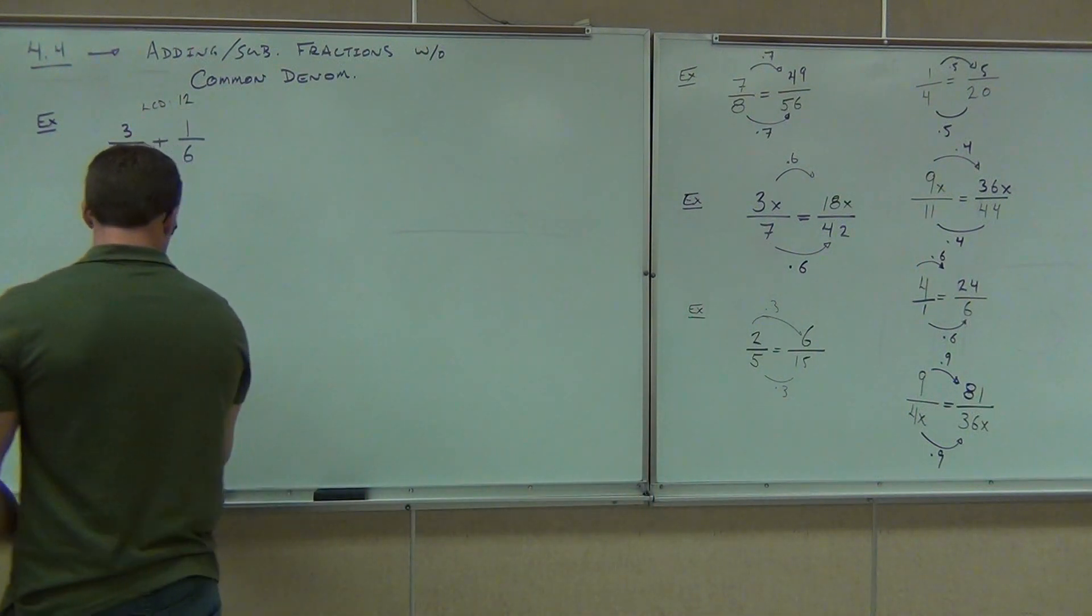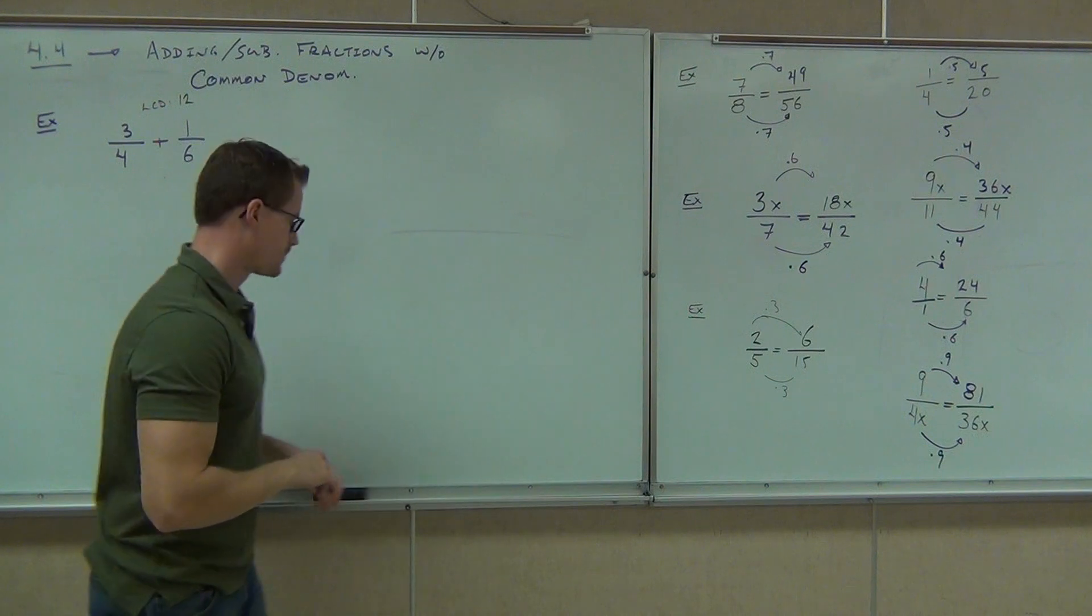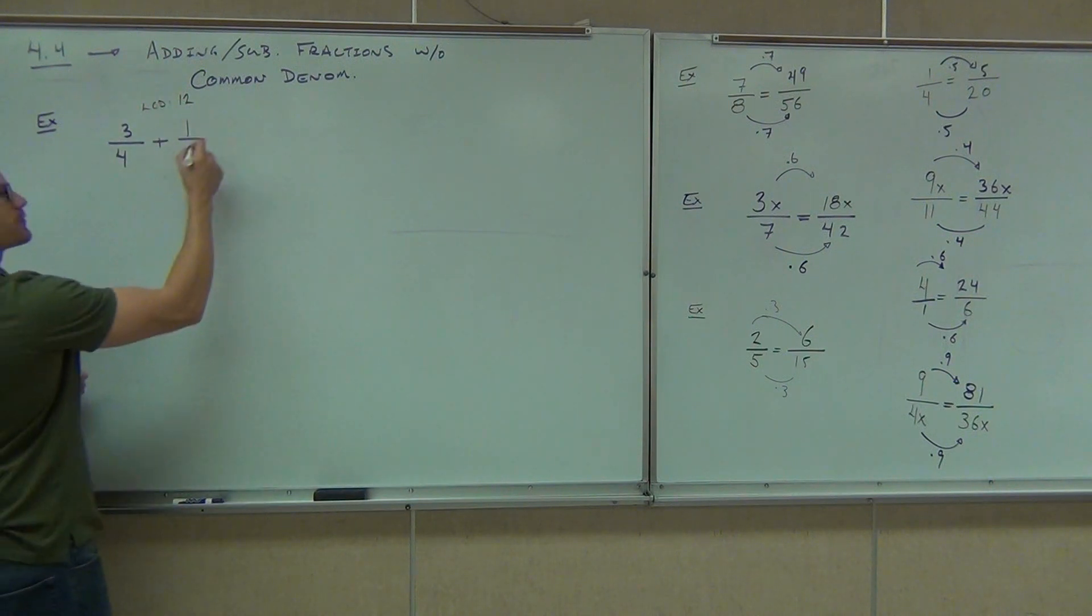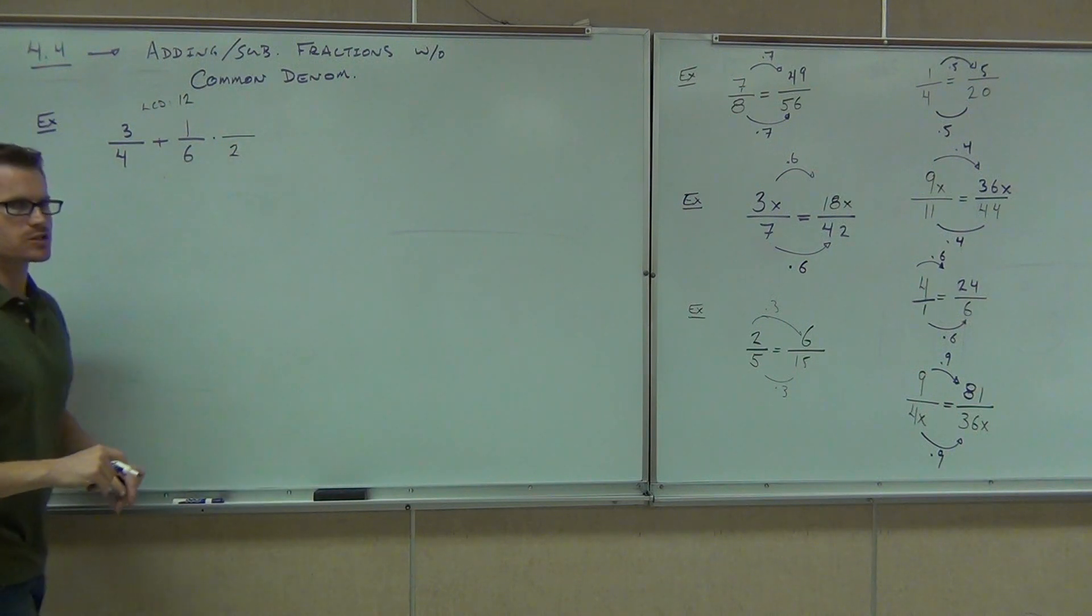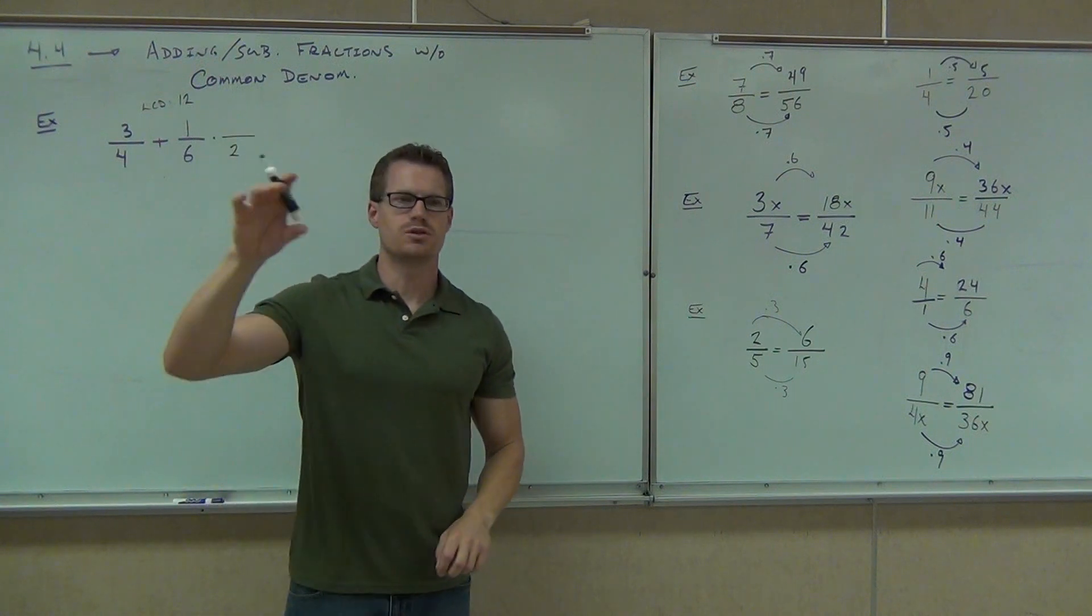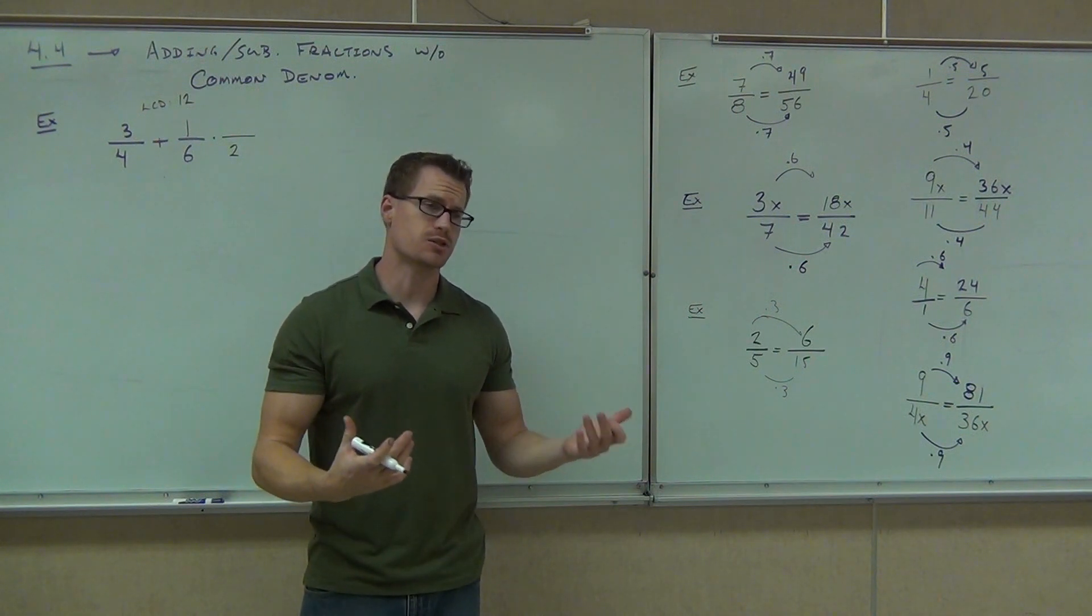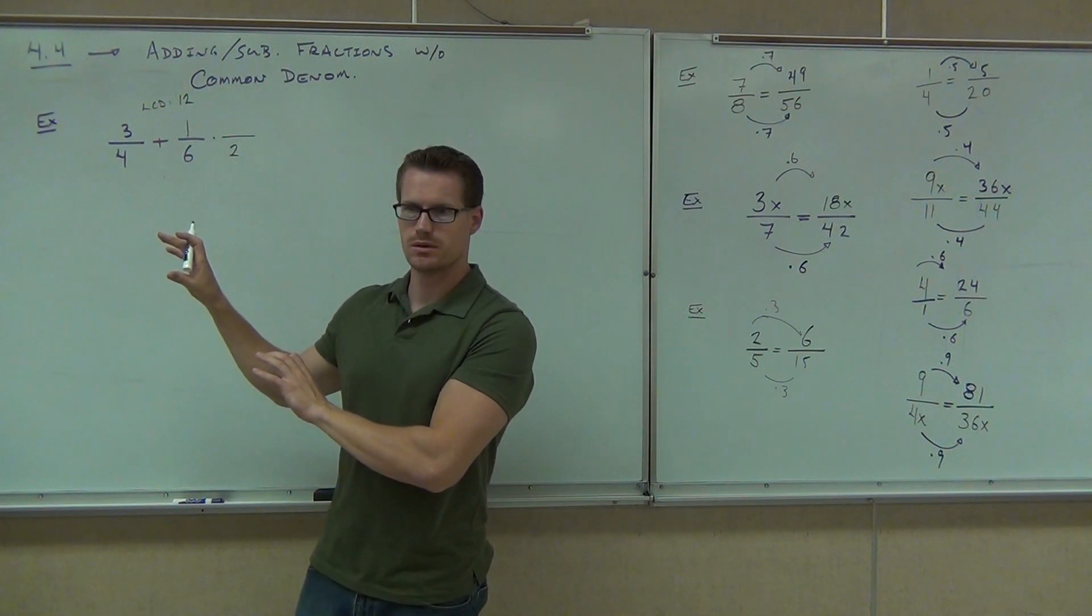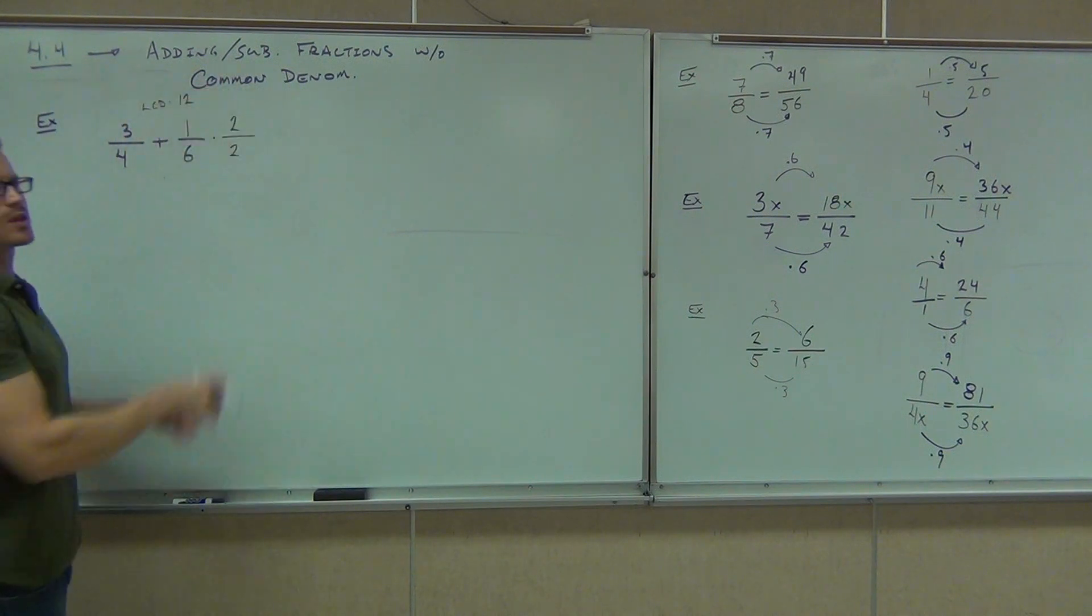Now what we do is we treat this problem like one of these equivalent fraction problems I have on the board. Here's what I mean. What we're trying to get to is 12 both here and here. So you ask yourself, what do I need to multiply by in order to get the 12? What number do I need to multiply 6 by in order to get 12? 2. Now, the key about fractions is whatever you do to the denominator, you have to do to the numerator. Otherwise, you change the value of it and we can't have that. An equivalent fraction means a fraction has the same value. Different denominator, but the same value. So if I multiply the denominator by 2, what else do I have to multiply by 2? The 1. Which is? 2.